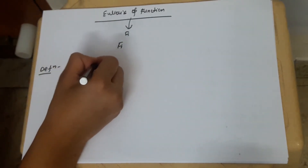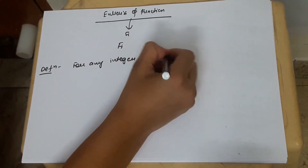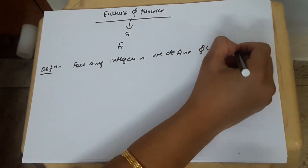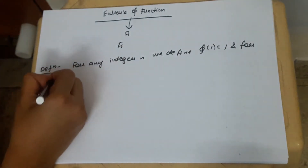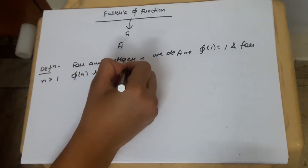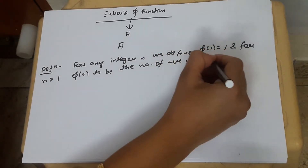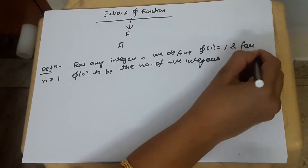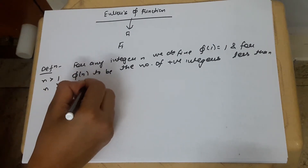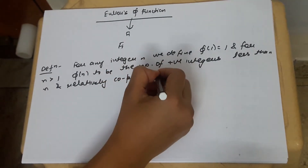For any integer n, we define phi of 1 is equal to 1, and for n greater than 1, phi(n) is the number of positive integers less than n and relatively co-prime to n.